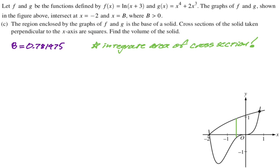Well, that's the cross section in the xy plane. And on that base, we're going to build a square. The area of a square is side squared. So if one side of the square is f(x) minus g(x), the area is f(x) minus g(x) quantity squared.